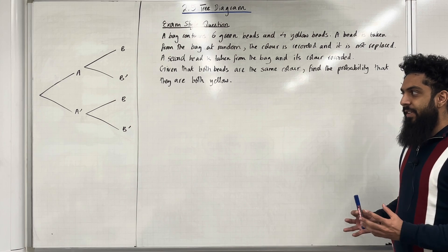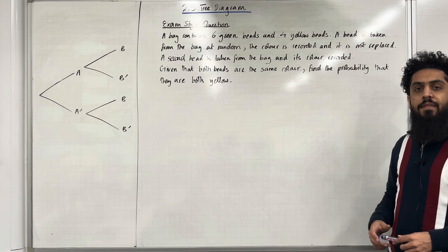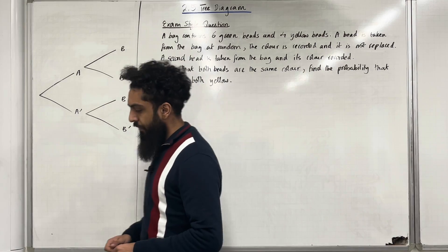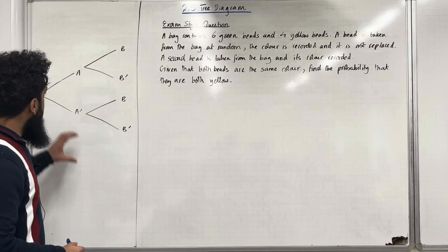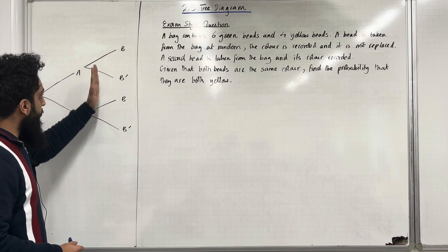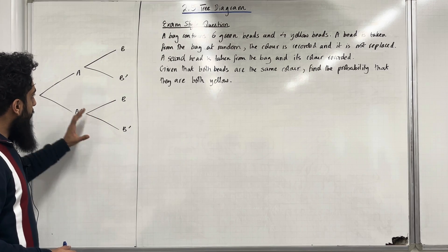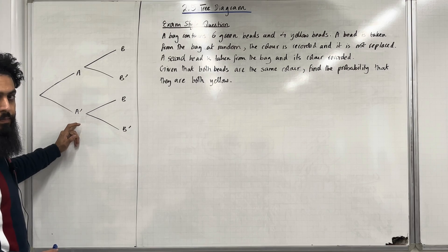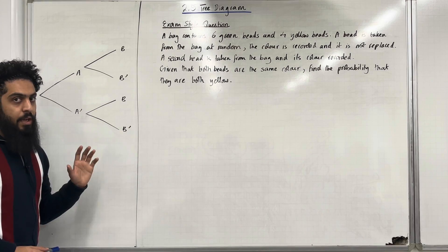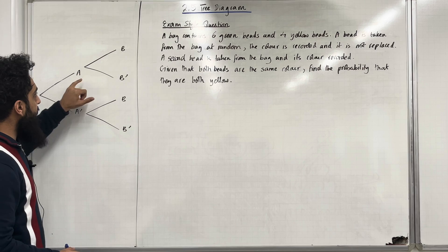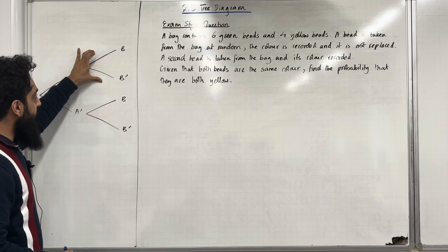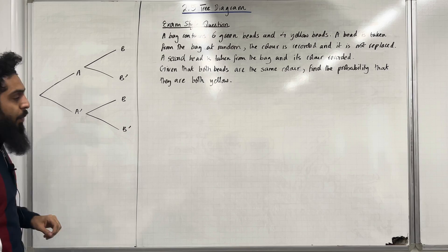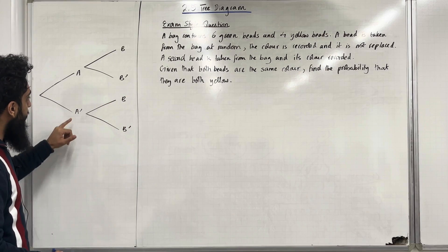I'm going to start this teaching video by explaining the important features of a tree diagram. So over here I've got a tree diagram. We have first pick and we have second pick. For the first pick we have two events, A and not A. For the second pick we have branches coming out of the event A, and we have branches coming out of the event not A.